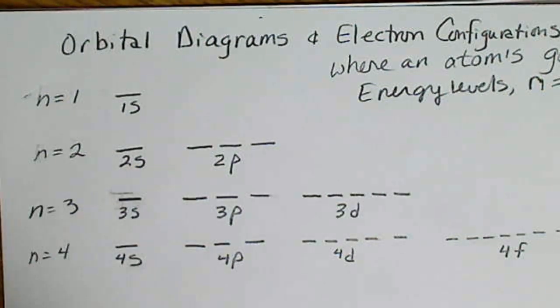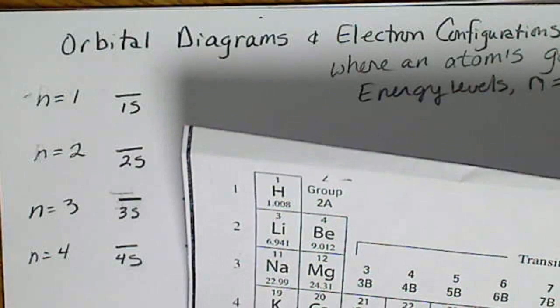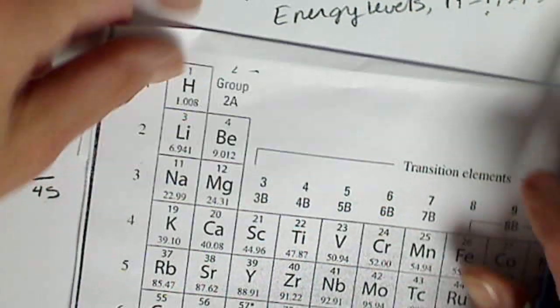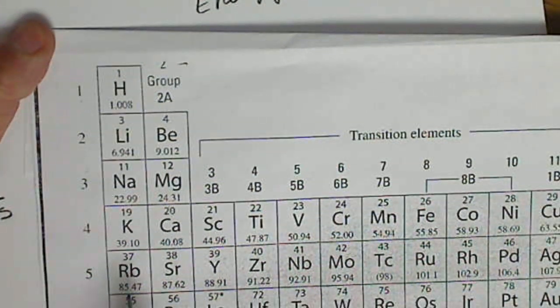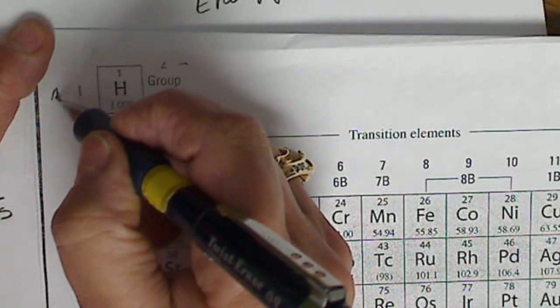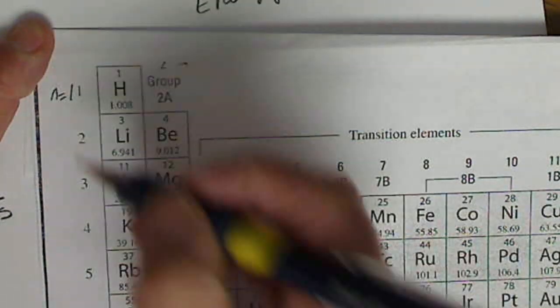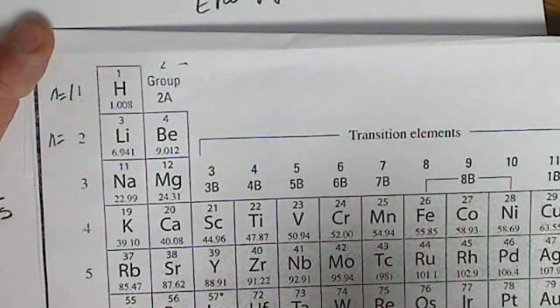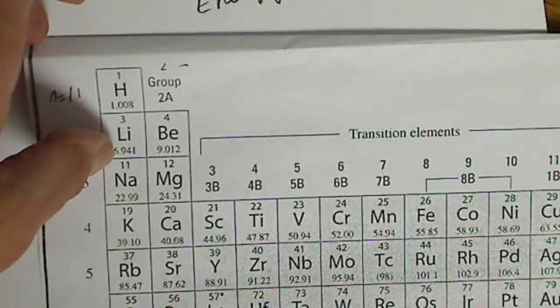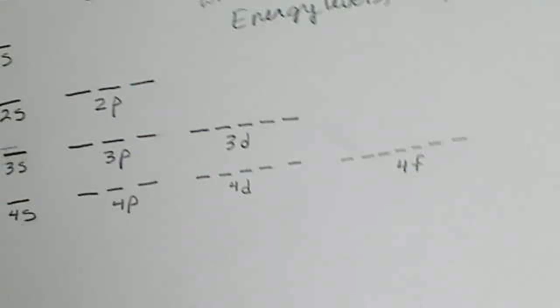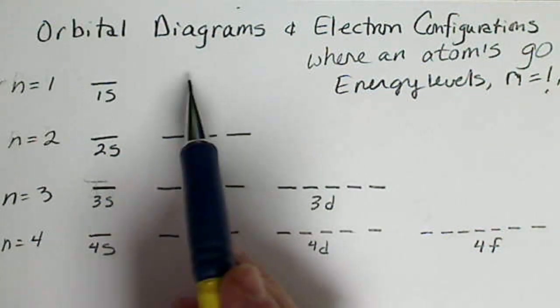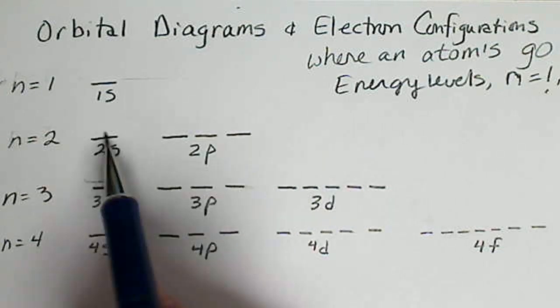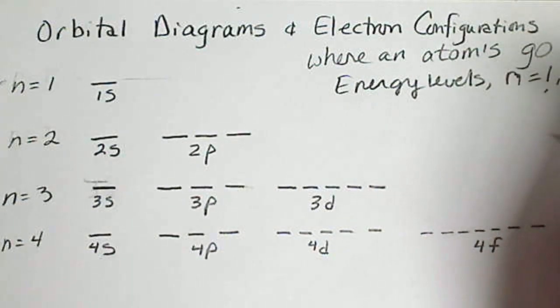This n value also corresponds to the periodic table. So this 1, 2, 3, 4, 5 as we go down the periodic table is also a representation of the energy levels. So here the energy levels go across the orbital diagram.